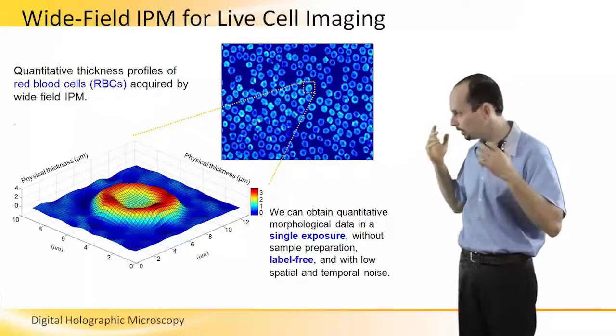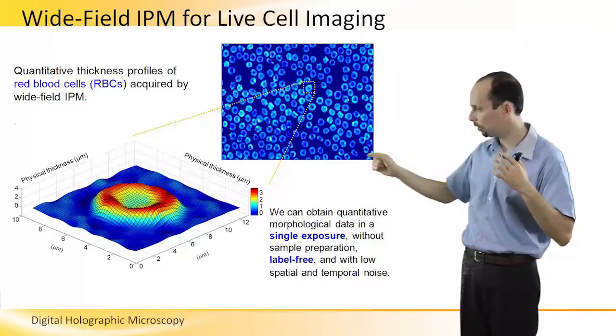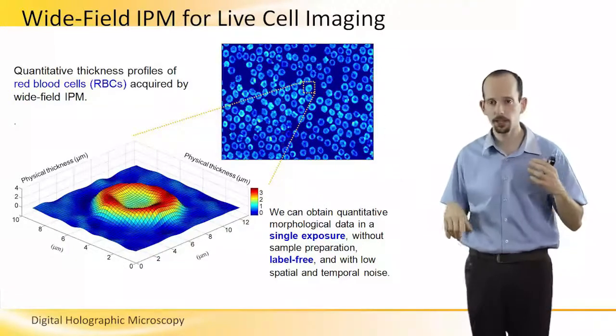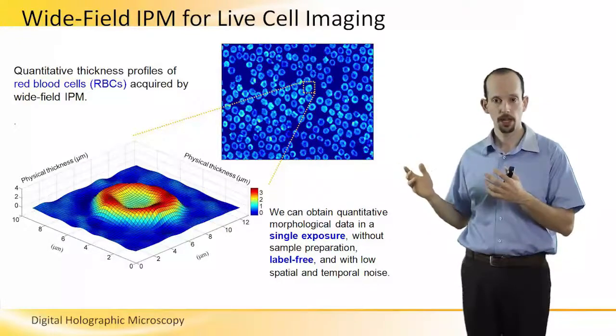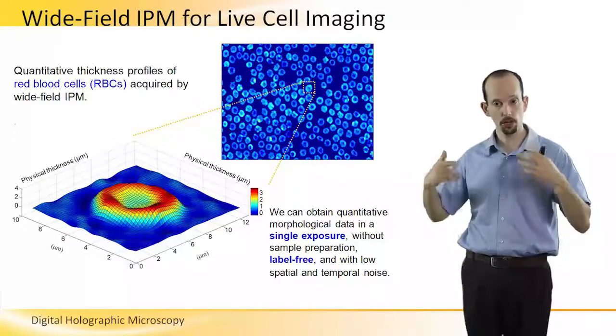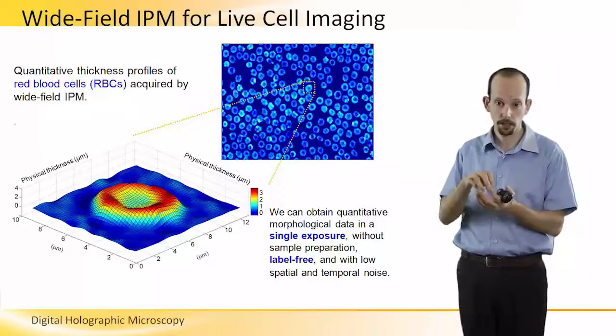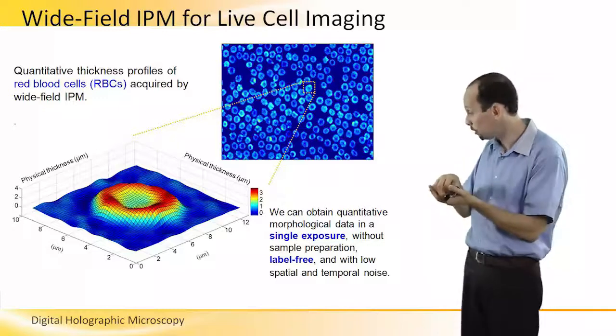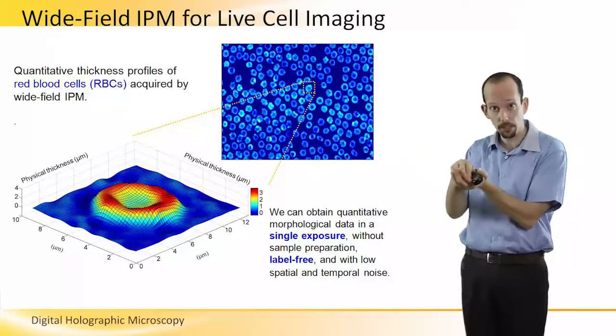Furthermore, I can use each cell in the field of view in order to reconstruct its physical thickness. For red blood cells, this is even simpler, because I'm not recording only the optical thickness, I'm recording the physical thickness, because for red blood cells that do not have a nucleus, I can actually assume a certain index of refraction per the entire cell.